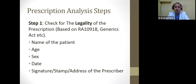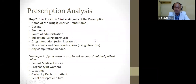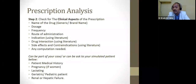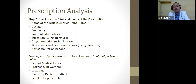Step two is about the clinical aspects. Under clinical aspects: the name of the drug, frequency, route of administration, indication, drug interactions, side effects, and contraindications. It may also involve computations needed for pediatric or geriatric dosing based on body weight or renal clearance of a geriatric patient who may have kidney failure or problems with the liver or other organs.